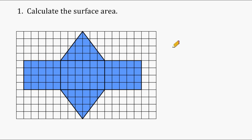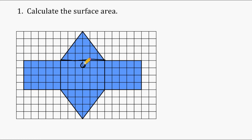For this first problem, we have to calculate the surface area of this object shown on the graph paper here, which is a triangular prism. The first thing I'm going to do is find the area of this triangular surface right here. If we take a look at its base, it has a base length of 6 and it has a height of 4.